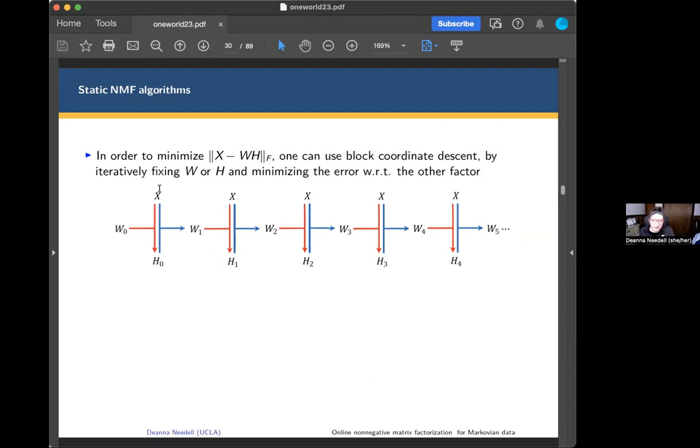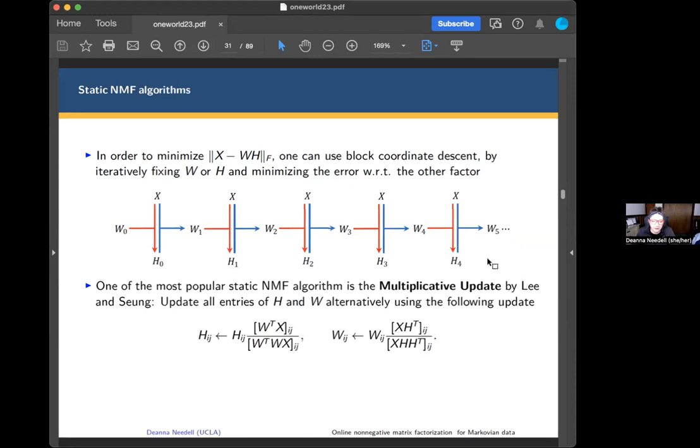In the static case where we have a single data matrix, the iterates look like this, and we're fixing one, solving for the other. This approach leads to a very simple algorithm from that same paper, which is a multiplicative update rule. You can write down the updates entry-wise of H and W in this way. You're essentially computing gradients, and you get non-negativity for free in the way these things fall out. So it's a really simple algorithm. You can see now why I had some undergrads jumping in and using this approach for summer programs.